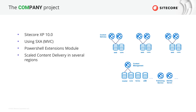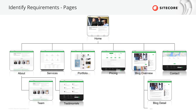The Sitecore XP implementation is still running on version 10.0 and using MVC SXA. Due to the nature of the Sitecore Experience Accelerator, they have Sitecore PowerShell Extensions installed as a module, and they have scaled out the content delivery web service geographically to provide better performance for the website visitors. The website structure shows a couple of pages that follow the same general layout in terms of header and footer, using different components in the main content area.